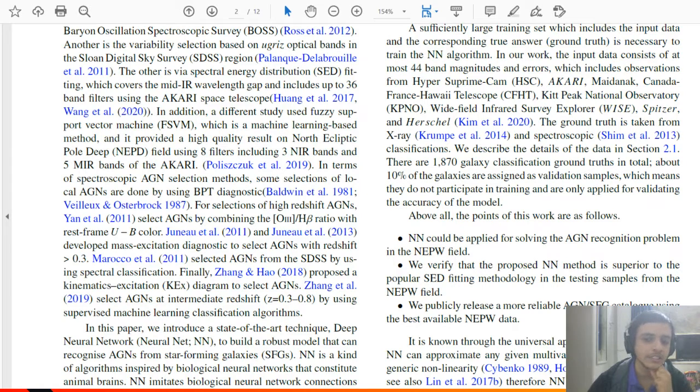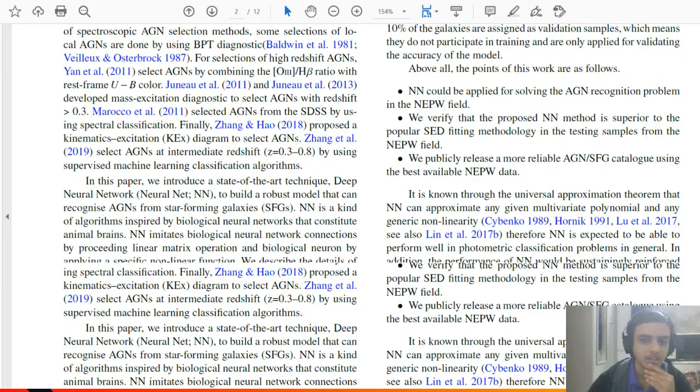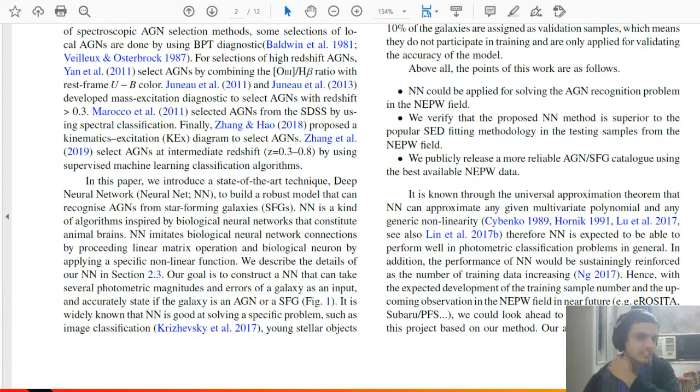The problem that they want to solve, the steps that they want to do is, first is to solve the AGN recognition problem. Can active galactic nucleus be recognized from the entire NEPW data set. And second is, they have to make a neural network and prove that it's better than the SED fitting. So that was the old statistical model that has been the conventional method.